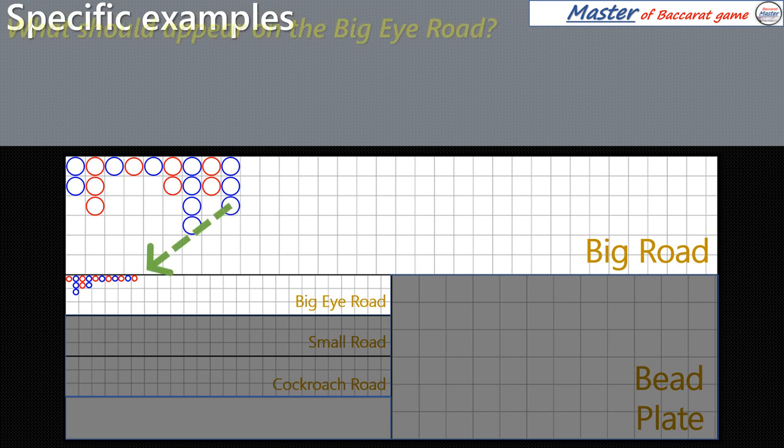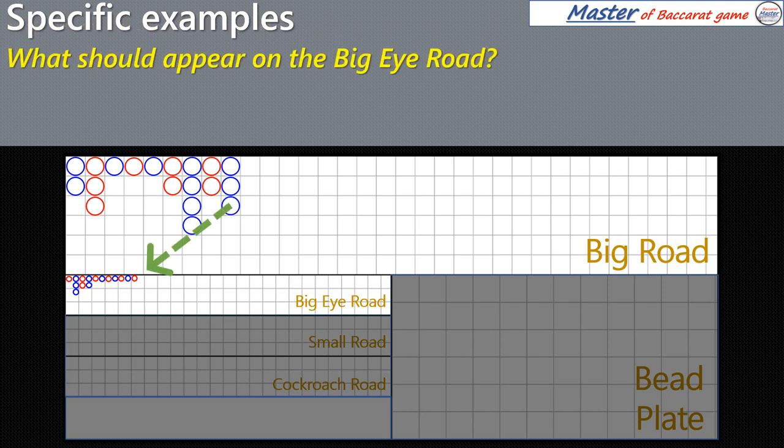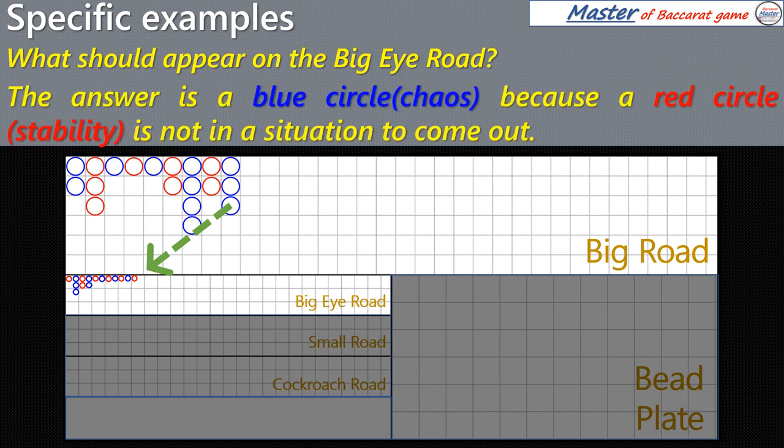What should appear on the Big Eye Road? The answer is a blue circle, because a red circle is not in a situation to come out.